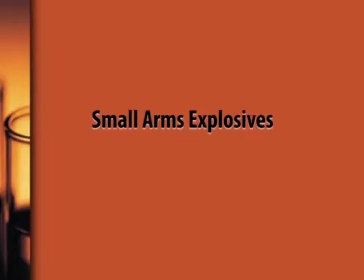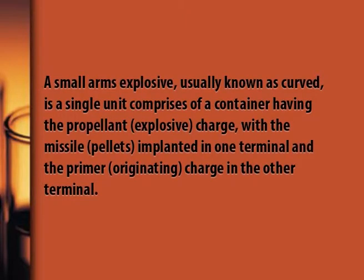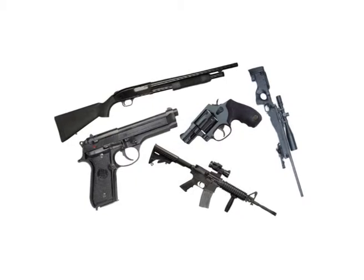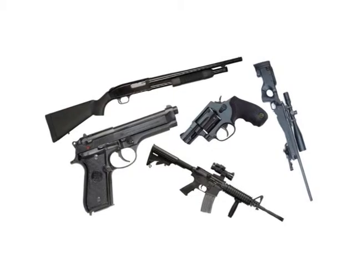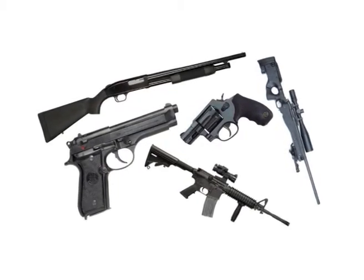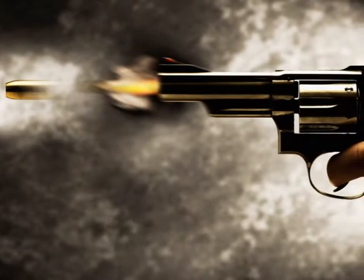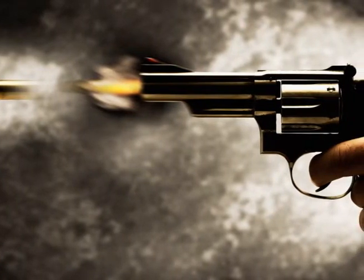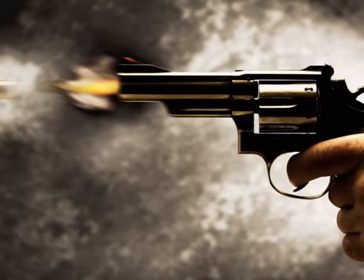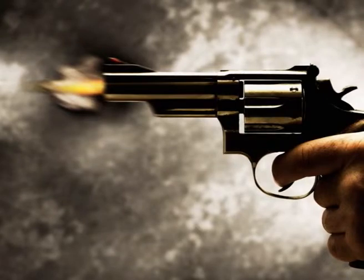The most usual forms of artillery found in the field include small arms explosives. A small arms explosive, usually known as a cartridge, is a single unit comprising a container with the propellant charge, the missile implanted in one terminal and the primer charge in the other terminal. Small arms explosives can be fired from pistols, rifles, shotguns and machine guns, and include projectiles of 0.5 caliber and smaller without an explosive warhead. Small arms explosives may detonate if thrown into a fire or if the primer is hit with a piercing article such as a nail.